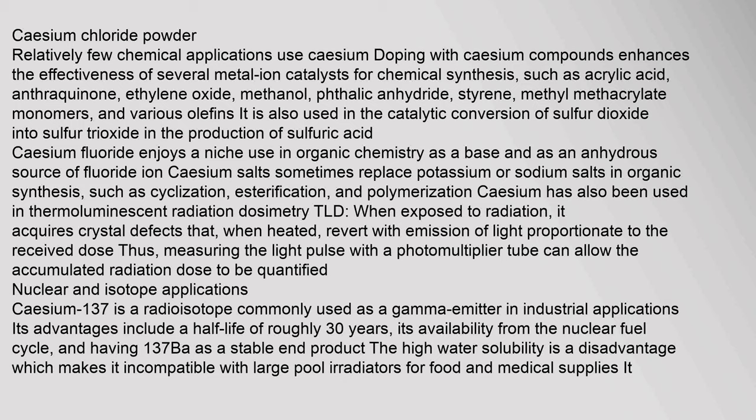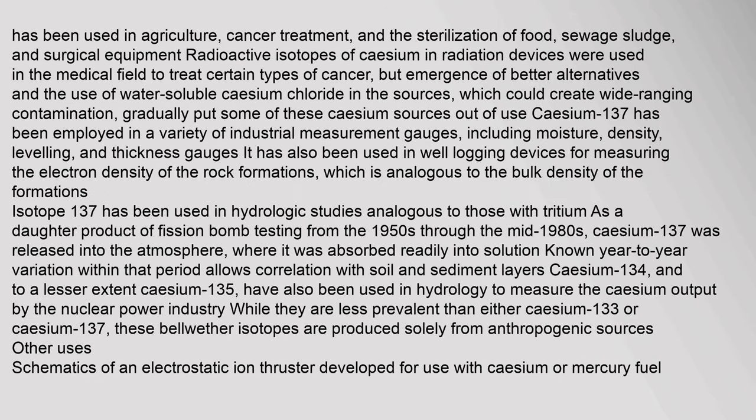Caesium-137 is a radioisotope commonly used as a gamma emitter in industrial applications. Its advantages include a half-life of roughly 30 years, its availability from the nuclear fuel cycle, and having ¹³⁷Ba as a stable end product. It has been used in agriculture, cancer treatment, and the sterilization of food, sewage sludge, and surgical equipment. Caesium-137 has been employed in a variety of industrial measurement gauges, including moisture, density, leveling, and thickness gauges, as well as in well-logging devices.